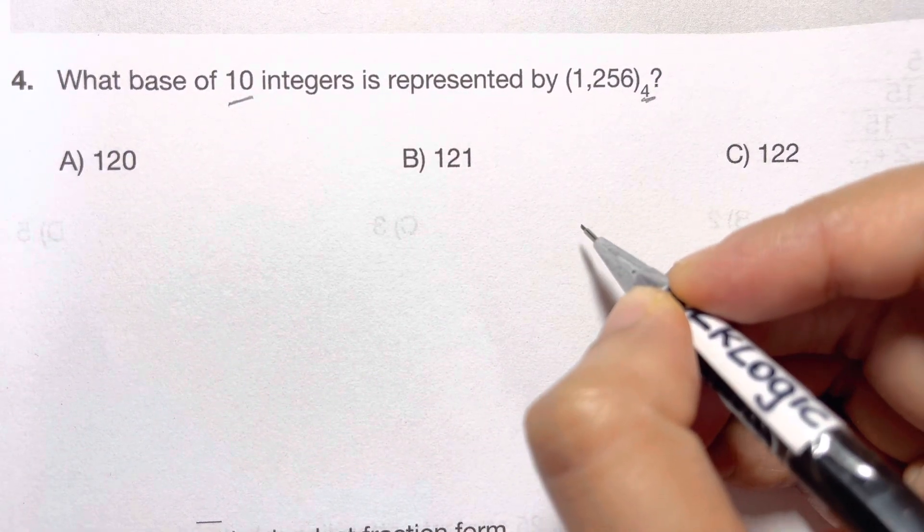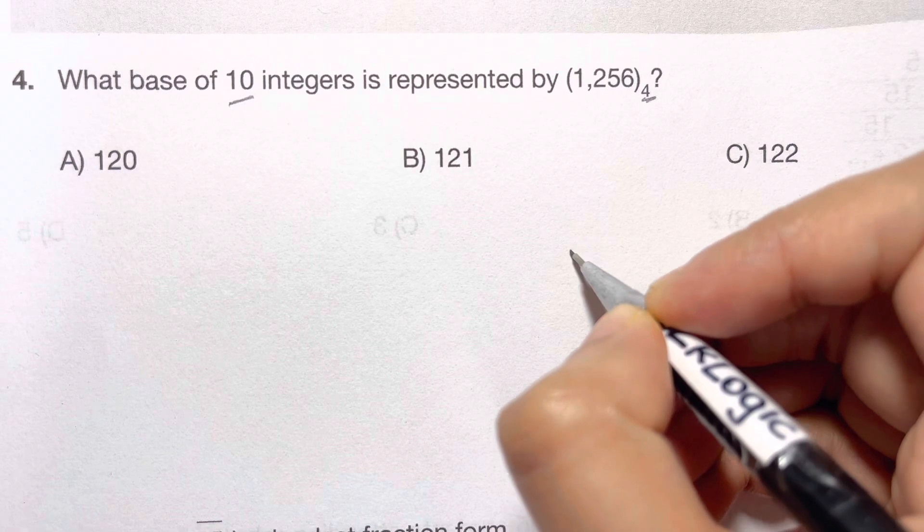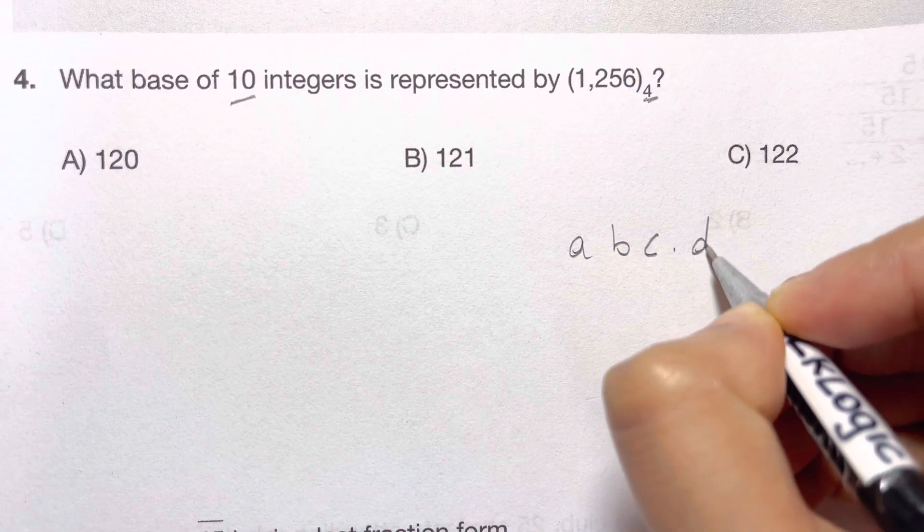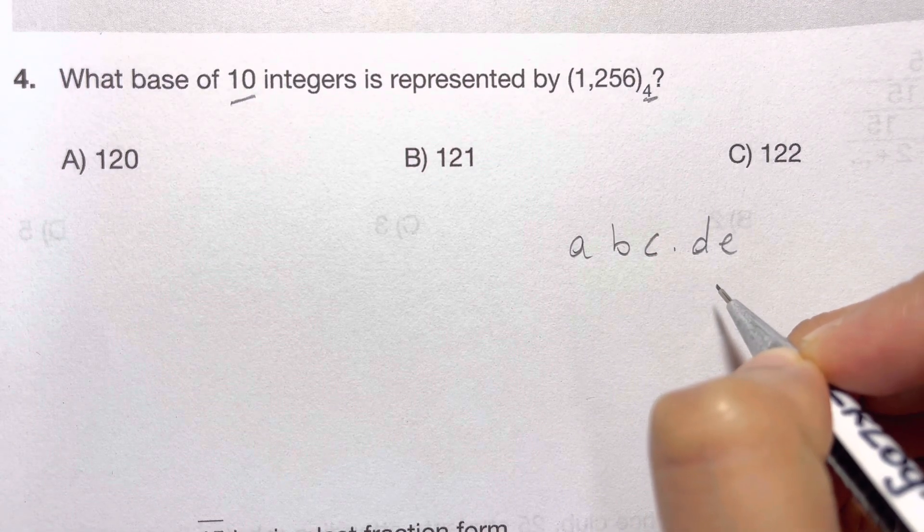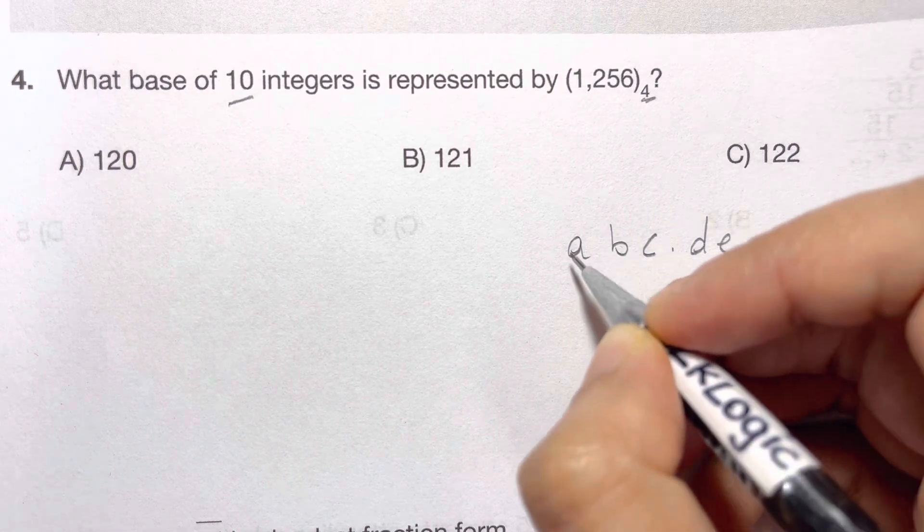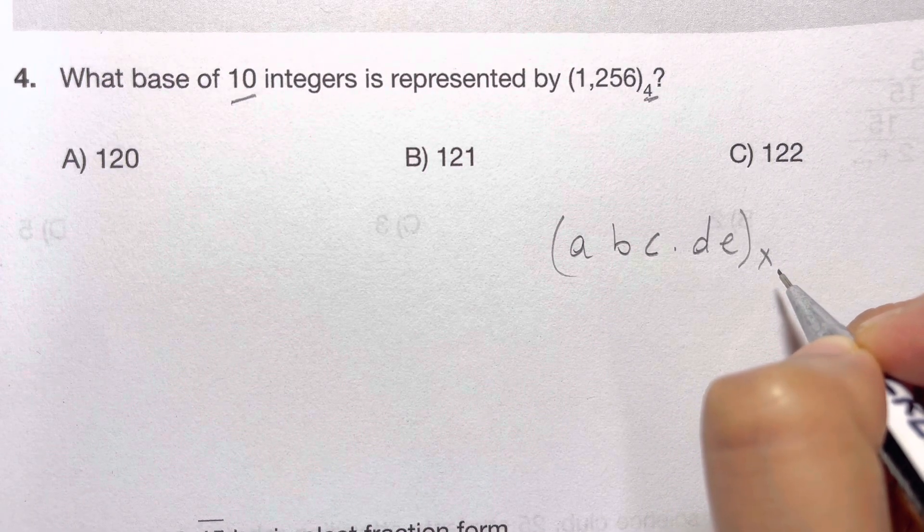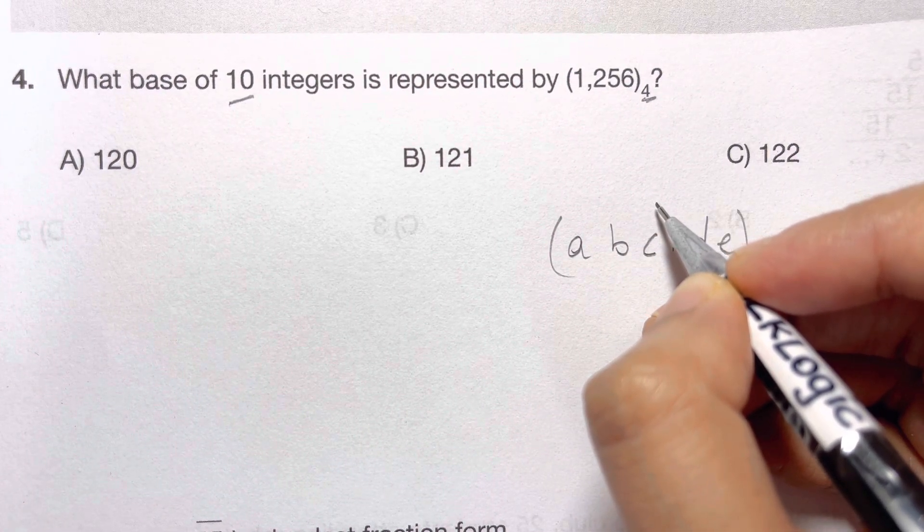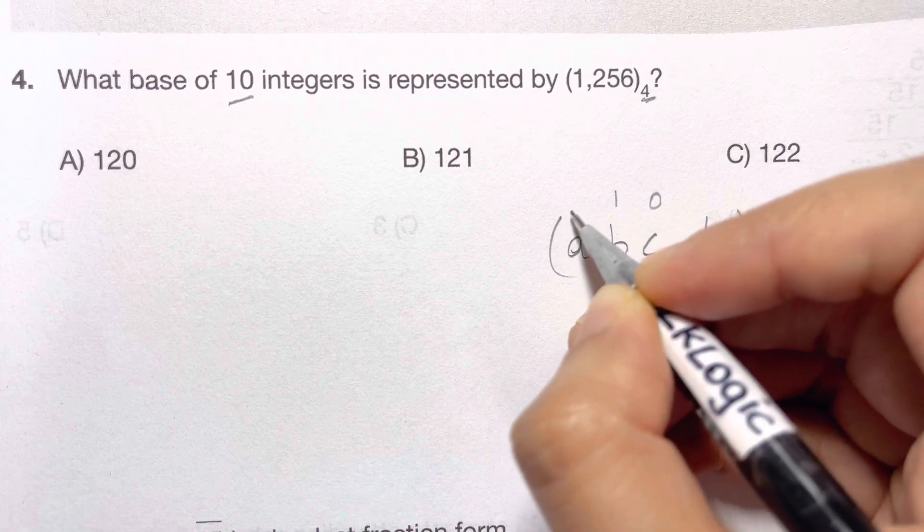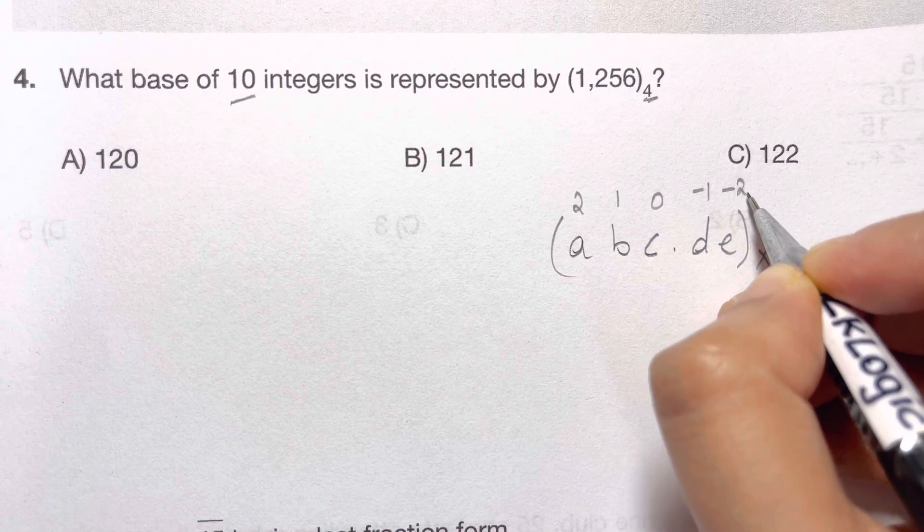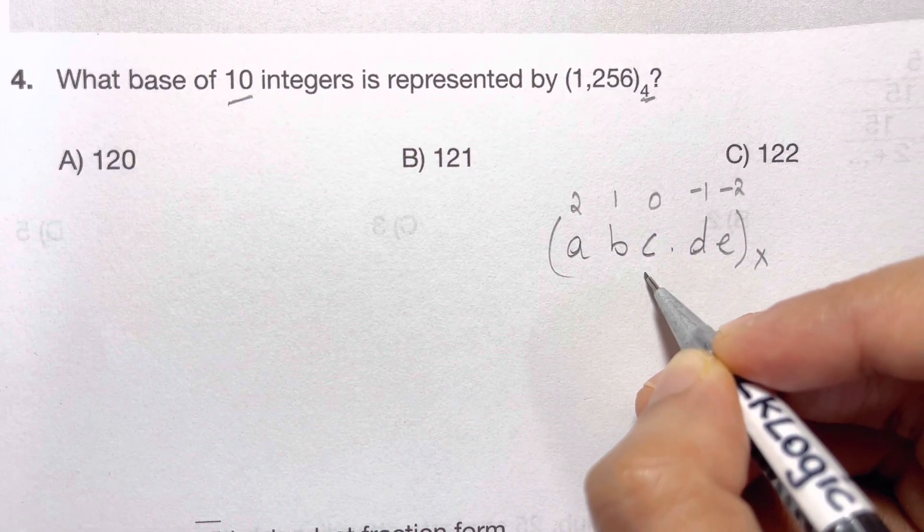Now whenever you have a number in this form, suppose you have something like ABC.DE to the base of X, any base. You have to denote it with the powers of 0, 1, 2 and this side negative 1, negative 2. So how do you write that?